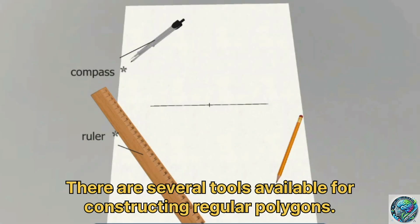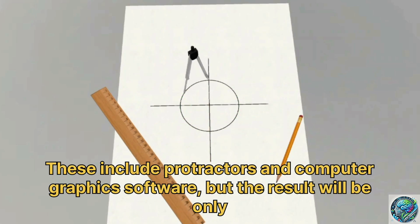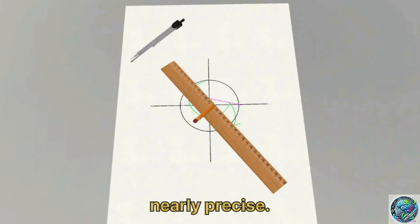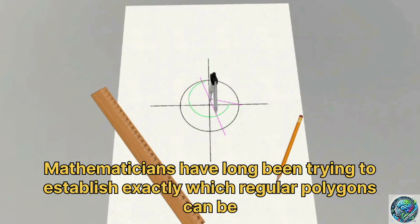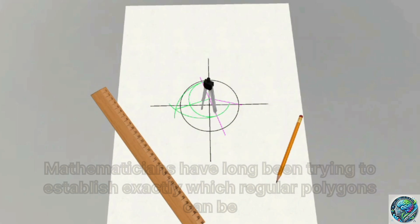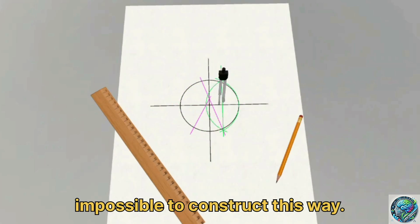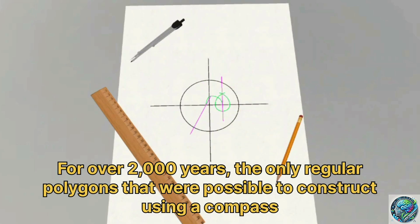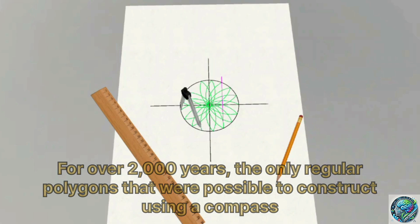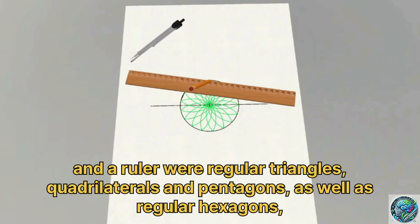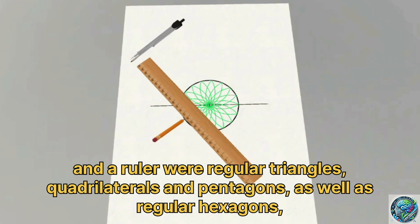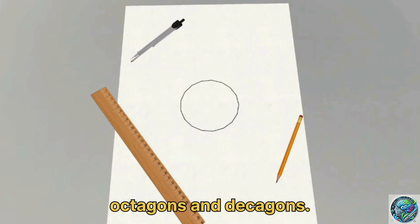There are several tools available for constructing regular polygons. These include protractors and computer graphics software, but the result will be only nearly precise. Mathematicians have long been trying to establish exactly which regular polygons can be constructed with the aid of only a compass and a ruler, and whether there are any that are impossible to construct this way. For over 2,000 years, the only regular polygons that were possible to construct using a compass and a ruler were regular triangles, quadrilaterals and pentagons, as well as regular hexagons, octagons, and decagons.